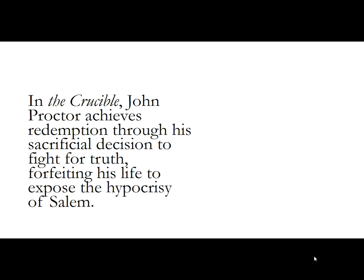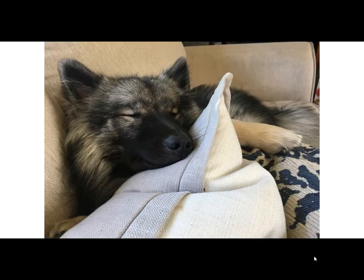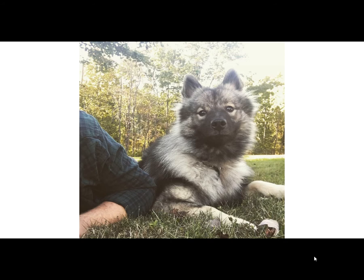Here's the best one: 'In The Crucible, John Proctor achieves redemption through his sacrificial decision to fight for truth, forfeiting his life to expose the hypocrisy of Salem.' I've added even more to this. Not only does he achieve redemption, but it's through this decision to fight for truth. If I think about this as a mini outline, I'm talking now about a clear focus: his decision about fighting for truth, the hypocrisy of Salem, and then how this means redemption for John Proctor. It gives me more argument, more pieces to discuss than the previous ones. It's like a full-grown adult thesis that you can take for a walk and talk about life with.